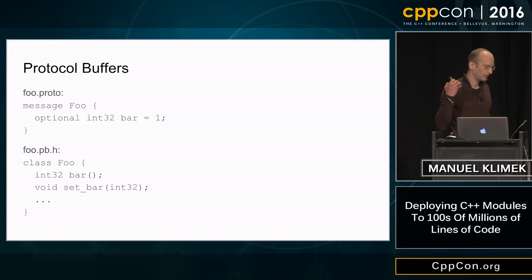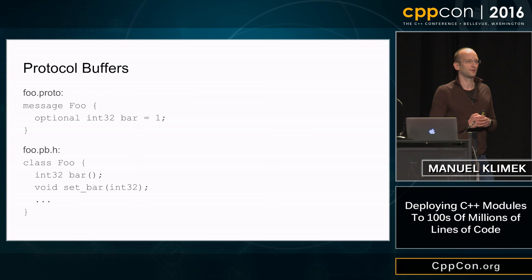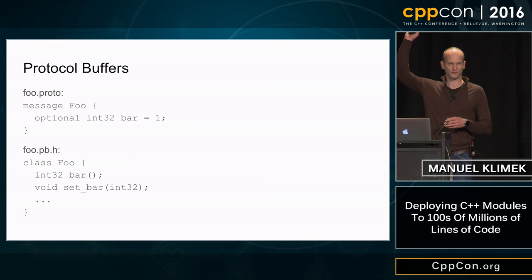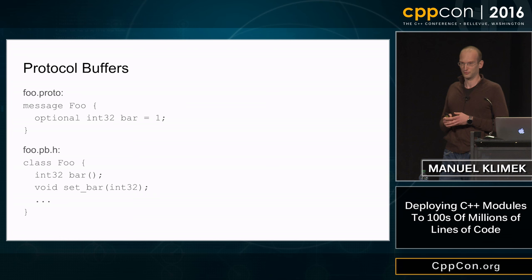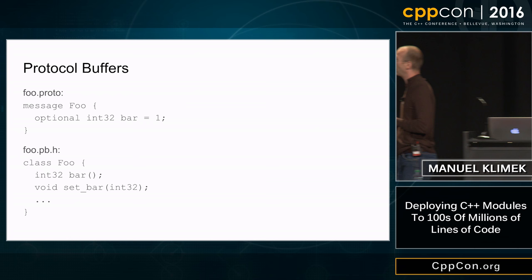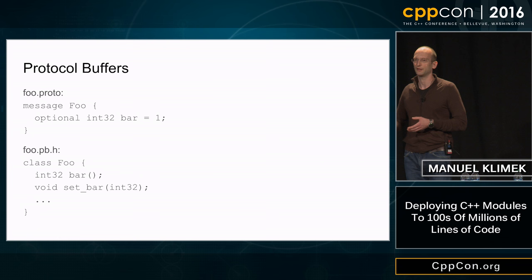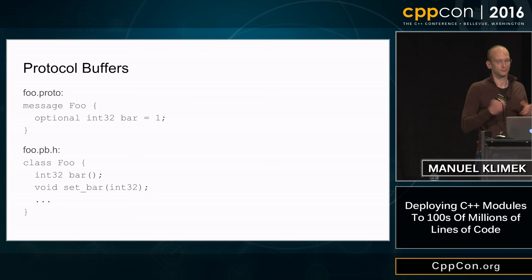If you look at the amount of generated code, we have roughly the same amount as handwritten code. That might seem like a lot, but it turns out it's mostly one kind: protocol buffers. Protocol buffers are how our servers communicate with each other, so they're really important. It's a simple data description language — a message with one field, bar, and the protocol compiler compiles that into a C++ header file with getters and setters. Protocol buffers are used all over our code as the main dependencies.